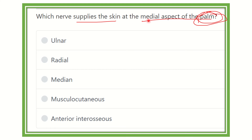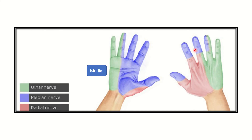Let's identify the medial and lateral aspects of the palm. Here is the palm of the hand — this part is the medial part, and this is the lateral part of the palm of the hand. On the medial side we can see the little finger, and on the lateral side is the thumb.